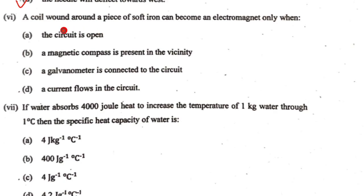The sixth subpart: the coil wound around a piece of soft iron core can become an electromagnet only when: the circuit is open? No. Magnetic compass is present in the vicinity? No. Galvanometer is connected in the circuit? No.